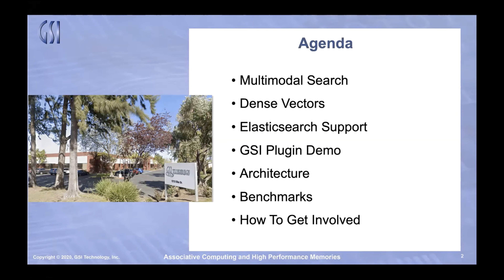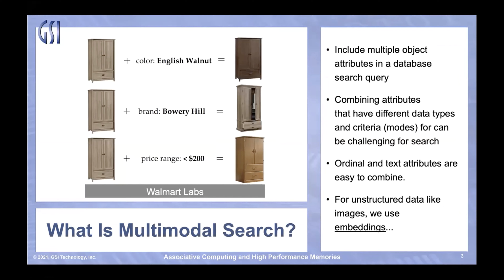Let's start out by defining multimodal search and use a visual example. It's a great example provided by our friends at Walmart Labs, showing three different ways in which a user may want to fine-tune their search, starting with a canonical large cabinet on the left. The first is fine-tuning based on wood type or color, the next using a brand name, and the one below that using a price range. The fine-tuned matches are obviously similar to the input query image, but they also satisfy the requested keywords or filters that are part of the query.